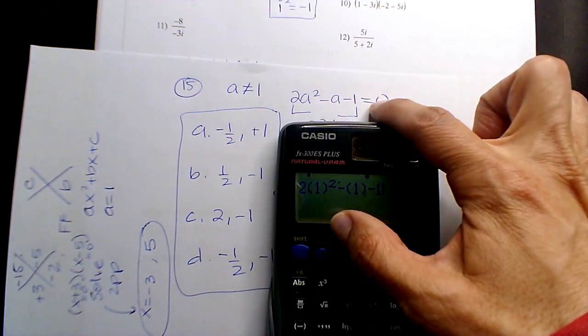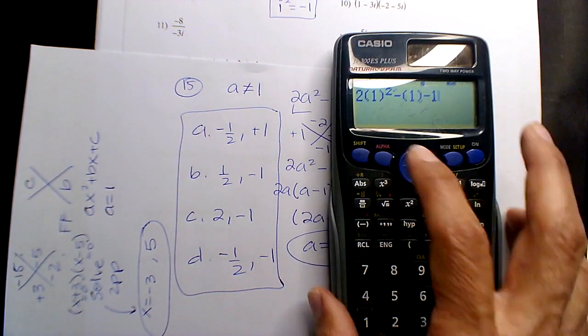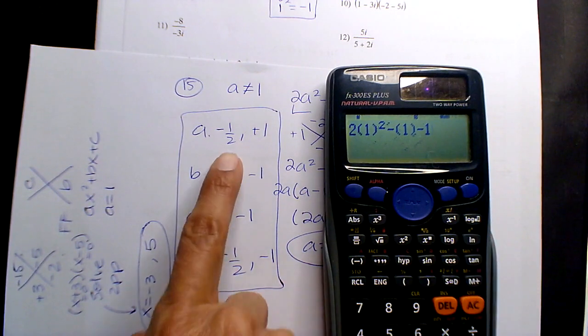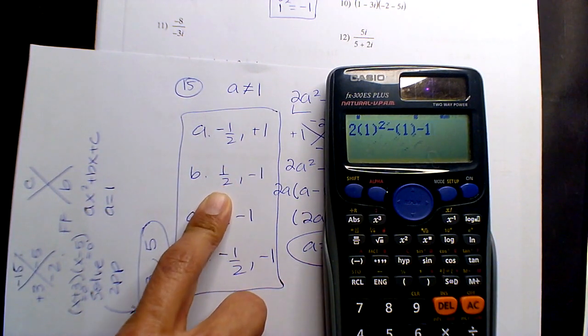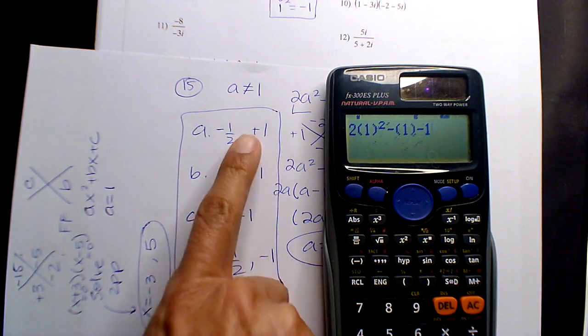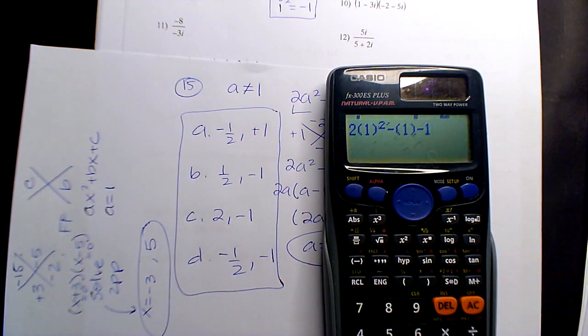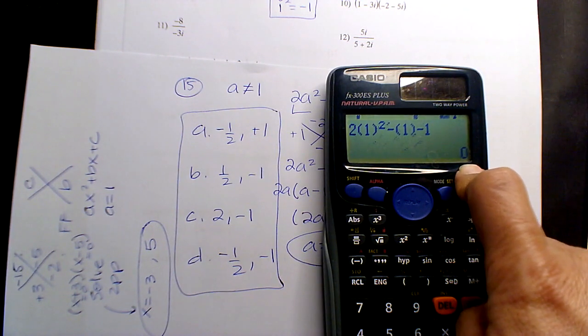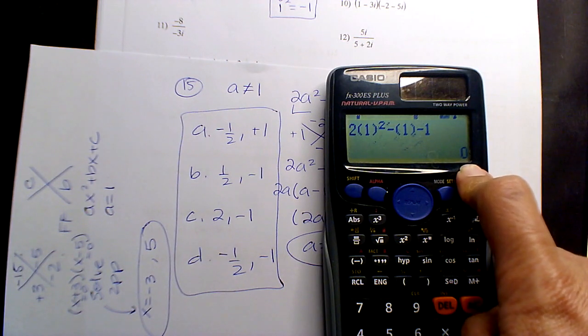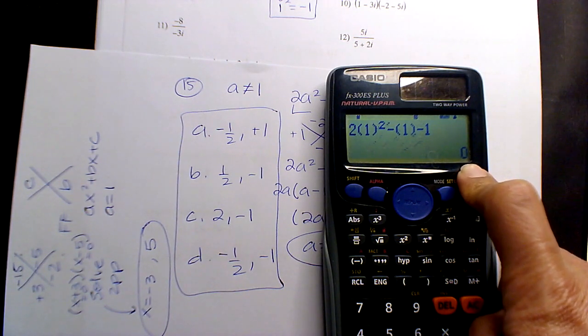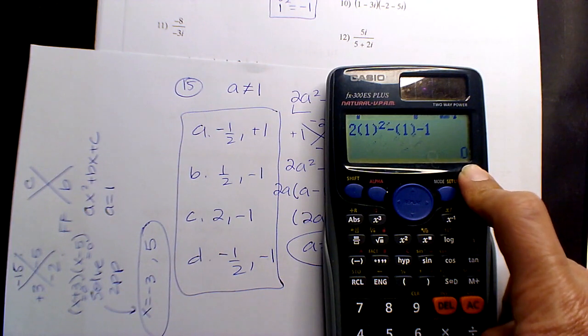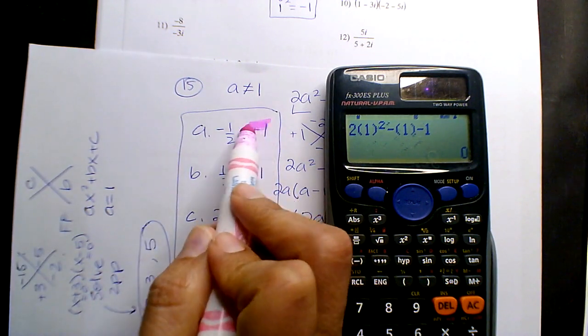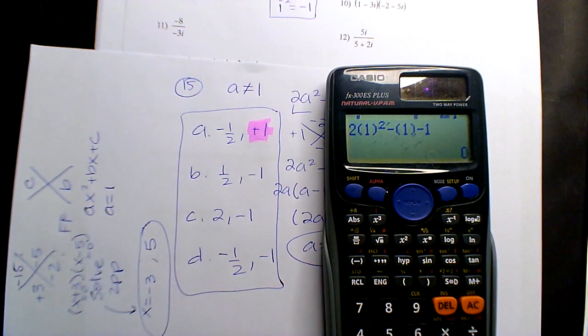So it's two a squared minus a minus one. So if I put in the positive one and I hit equal and I get zero, what does that tell you that I got a zero? Good or bad? Good. Because the zero product property. So that means positive one is a winner. This is good. So that means that's your only option.